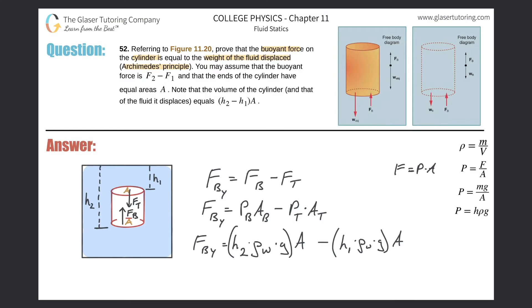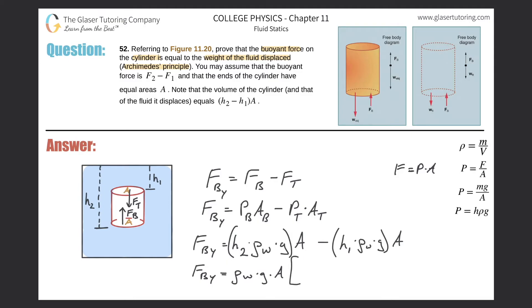Now I want to pull out common terms. The buoyant force equals the density of the water times gravity times the area — since each of those two terms share those three things — multiplied by the difference H2 minus H1. The problem gives us a hint that A times (H2 minus H1) is equal to the volume.